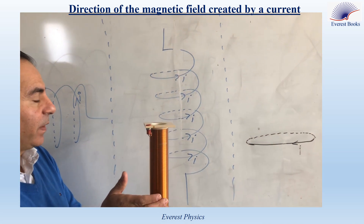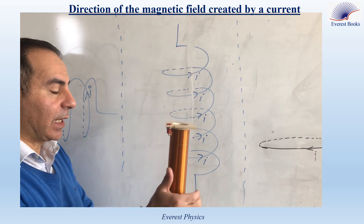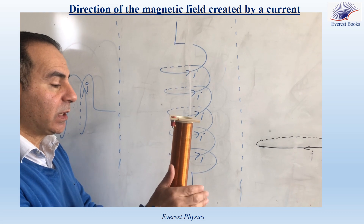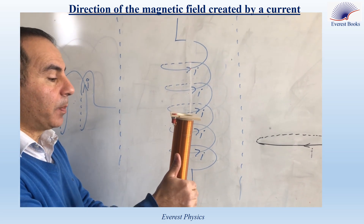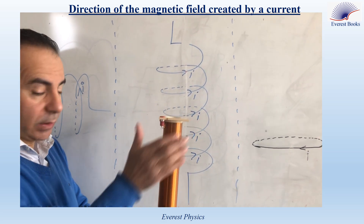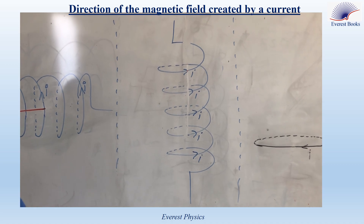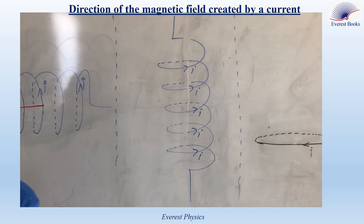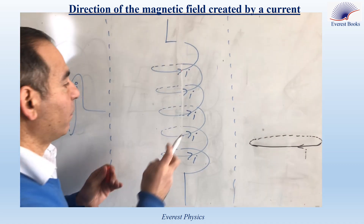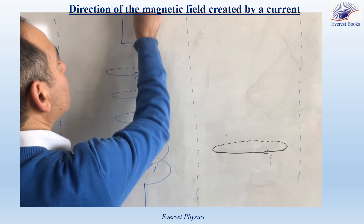we carry the fingers of the right hand in the sense of the current. As you see, the thumb points vertically upward. So the magnetic field created inside the solenoid is directed vertically upward.